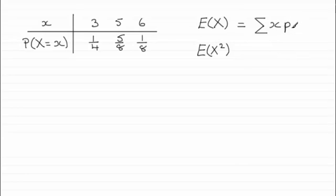So for example, if we had this discrete probability distribution table for a random variable X, then we've got these observed values - I've just selected 3, 5, and 6, obviously it can be any set of values - with the corresponding probabilities of a quarter, five-eighths, and one-eighth respectively. Remember those probabilities should always add up to one.